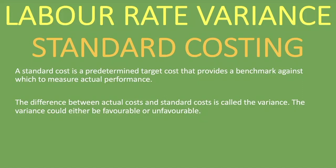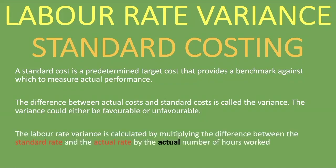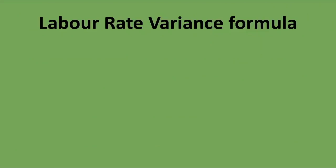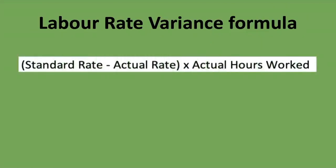The labor rate variance is calculated by multiplying the difference between the standard rate and the actual rate by the actual number of hours worked. The formula is: standard rate minus actual rate, multiplied by actual hours worked.